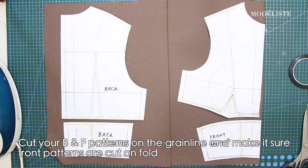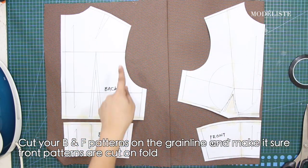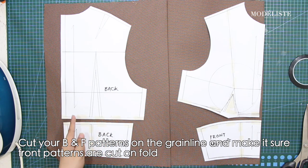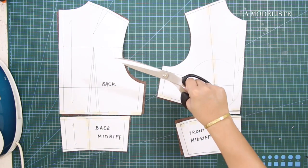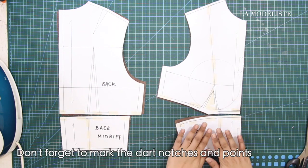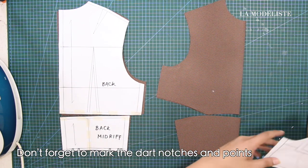Cut your back and front patterns on the grainline and make sure that the front patterns are cut on fold. Don't forget to mark the dart notches and points.